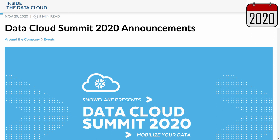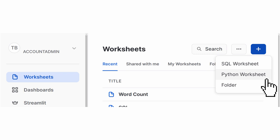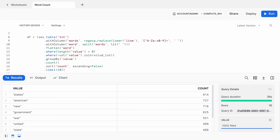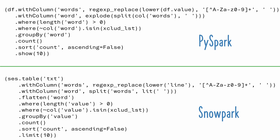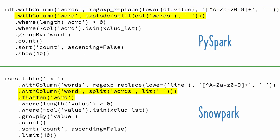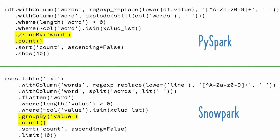With Python worksheets, folks can build data pipelines, ML models, and data apps directly from Snowflake's user interface, SnowSight, like I did here when I built a Snowpark word count program. The Snowpark APIs are so similar to the Spark APIs that folks with experience in Spark will have no trouble writing Snowpark code. First we convert all letters to lowercase and remove all punctuation. Then we convert each line of text into an array of words and create a new row for each word. We remove empty strings, remove all common stop words, count all occurrences of each word, sort by count from highest to lowest, and display the top ten most frequent words.